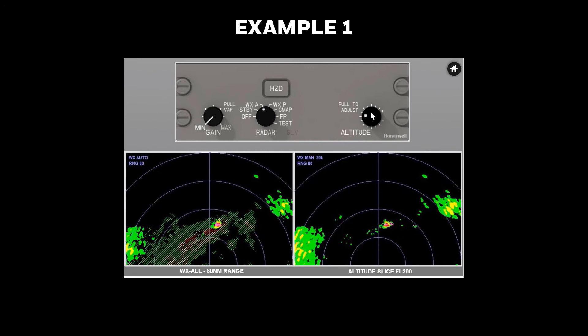Using the altitude knob, a slice at flight level 350 shows a clear corridor on the right-hand display for deviation around the weather.